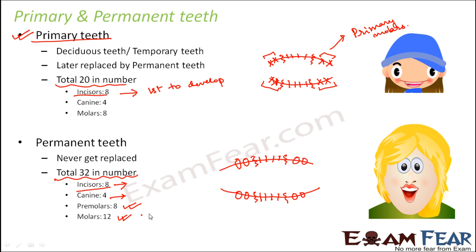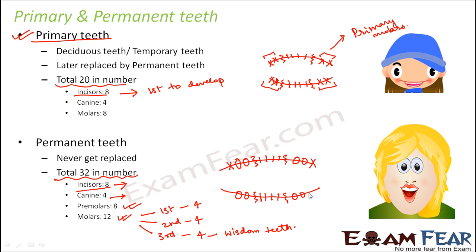For molars in the permanent set, there are 12 in total because there are three types: first molars, second molars, and third molars — four of each type. The third molars are the wisdom teeth, which come quite late and may not even come at all. So whether you get your third molars or wisdom teeth is doubtful.